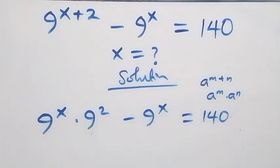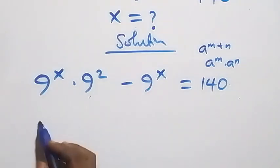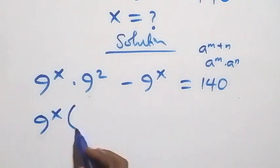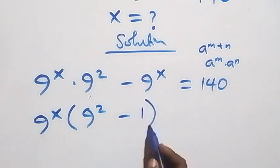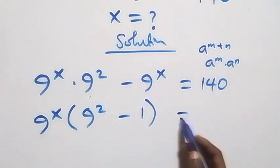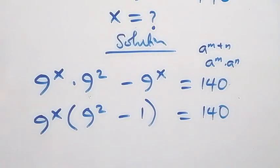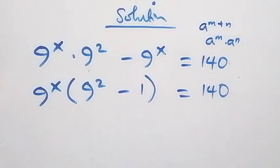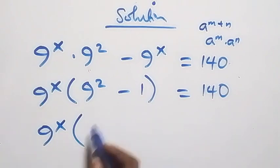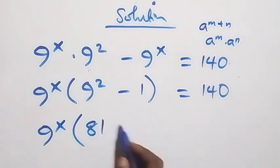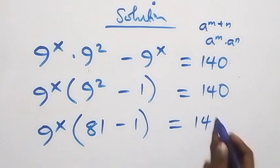On this side, we have n raised to power x. We factor it out and we have n raised to power x into brackets n squared minus 1, which equals 140. That gives us n raised to power x into bracket n squared — that is n times n, which is 81 — then minus 1, equals 140.